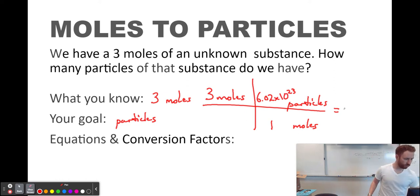So all we're going to do now is we're going to multiply 3 times 6.02 times 10 to the 23rd, which gives you 1.806 times 10 to the 24th. And the units are going to be, well, here's the whole thing. When you put moles in the numerator and moles in the denominator, they eliminate each other, and you're left with just particles.